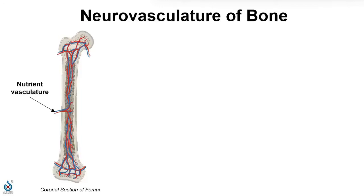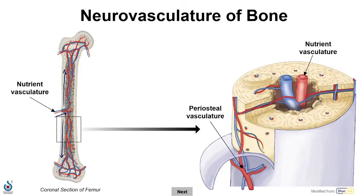The blood supply to a bone comes from branches of arteries that supply the surrounding muscles and joints. Bones receive a rich blood supply with extensive communication between its many sources. I'm going to use the term vasculature to represent arteries and veins together. One or more large nutrient artery will often enter the bone at the diaphysis. The nutrient artery will then split into branches that ascend and descend, supplying the internal surfaces of the bone.